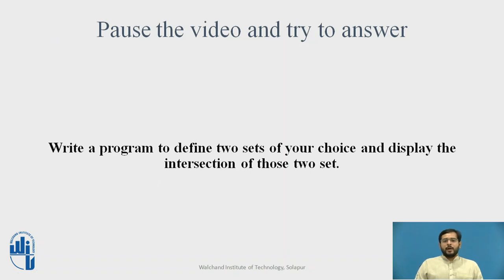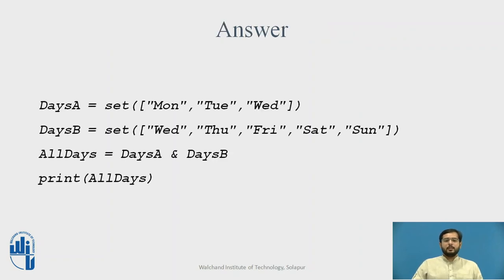Try to write code for the following: define two SETs of your choice and display their intersection. The answer: we define set A with elements Monday, Tuesday, and Wednesday, and set B with elements Wednesday, Thursday, Friday, Saturday, and Sunday. We store the intersection in a third set called all_days. It prints only Wednesday, since Wednesday is the only element common to both days A and days B.